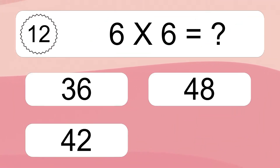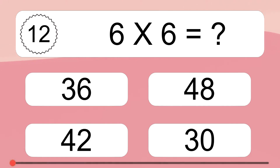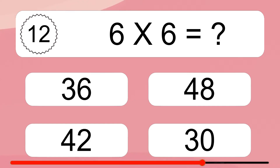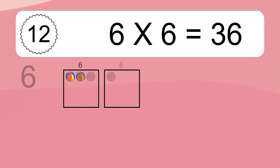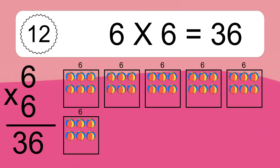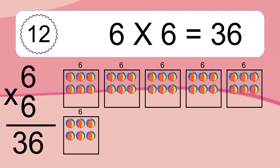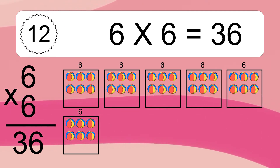6 times 6 equals what? 6 times 6 equals 36. We have 6 boxes and each box has 6 colorful balls inside. If you count all the balls in all the boxes together, you will have 6 times 6 balls. This equals 36 balls.